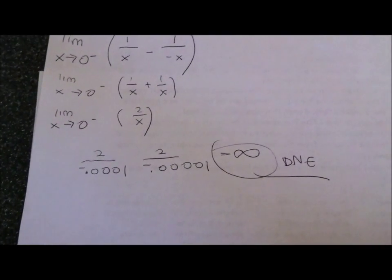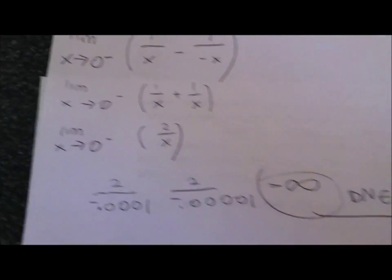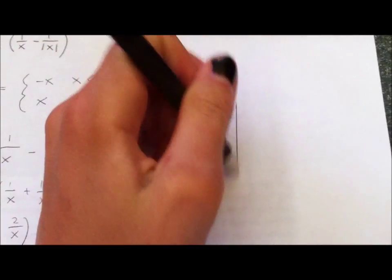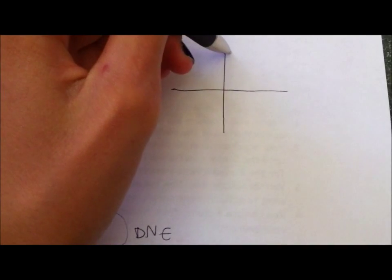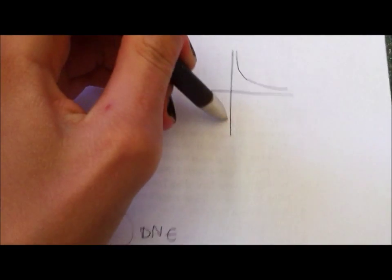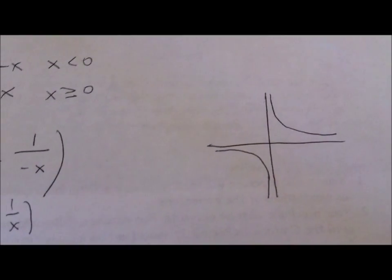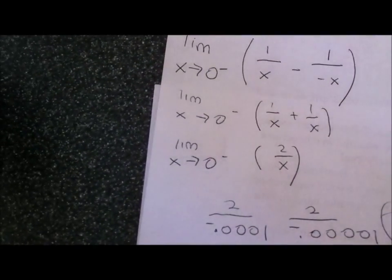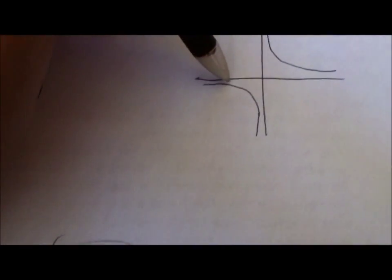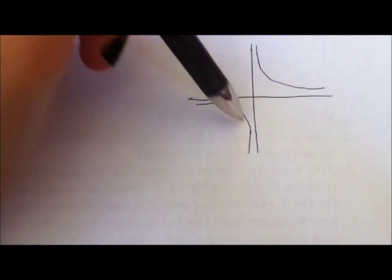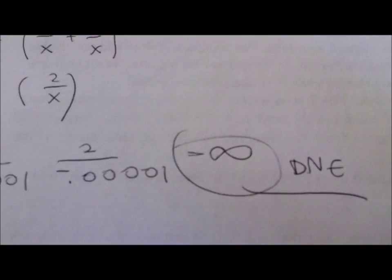So the other way to look at this is to look at 2 over x, and we know that that's going to kind of look like this, like 1 over x. So if we're looking at the limit as x approaches 0 from the left, then we're just looking at it as it approaches 0 from the left, and we notice that it goes to negative infinity, which is consistent with what we said here. So yeah, either way.